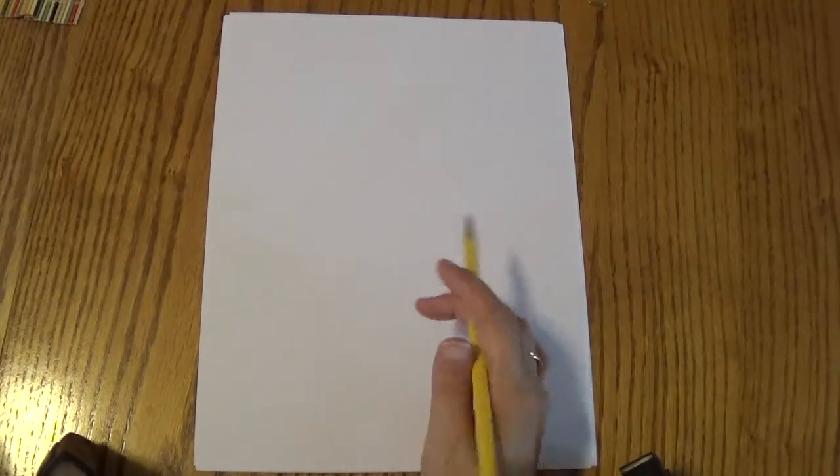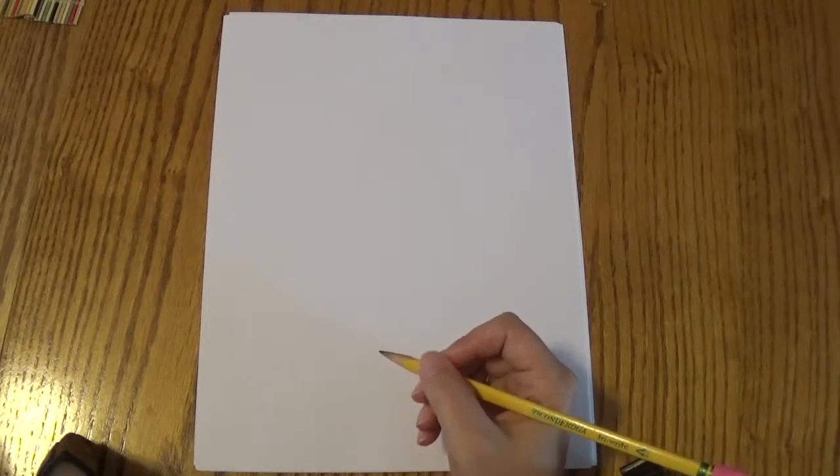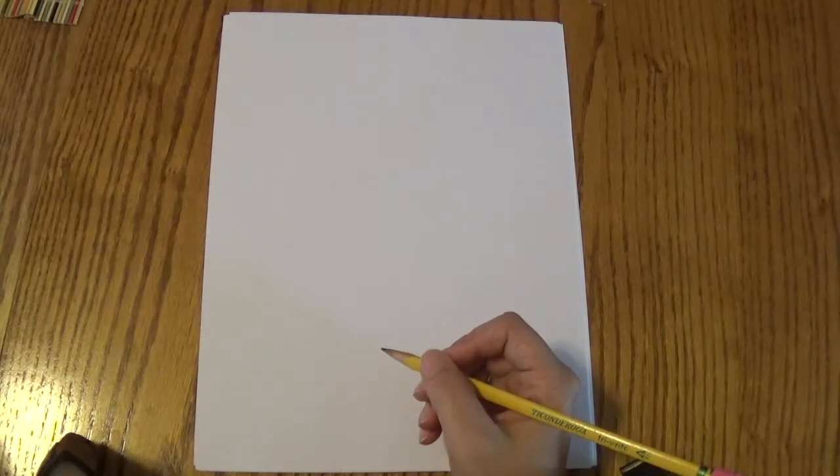Today we are going to draw a picture of the map of the state of Michigan. So I want you to pay close attention to when I'm drawing lightly and when I'm drawing hard because there are going to be a lot of parts that you're going to erase afterwards. So just make sure you're paying attention to how hard I'm pressing with the pencil. And I'll say it out loud as well.